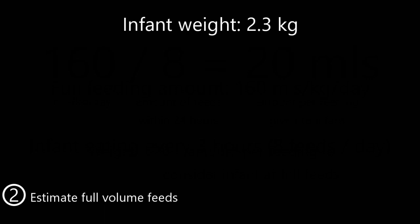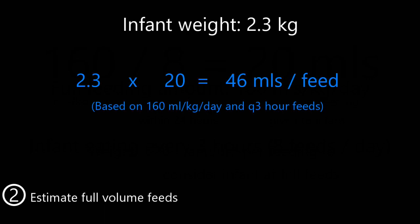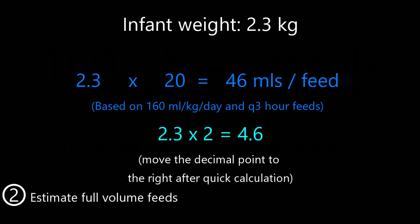For example, if a baby is 2.3 kilos, multiply 2.3 by 20 and you get 46 mL. So for a 2.3 kilo baby to be on full feeds at 160 mL per kilo per day, they need to be eating 46 mL every three hours. The way I do it quickly: 2.3 times 2 is 4.6, then move the decimal place to get 46.